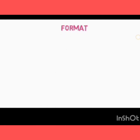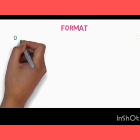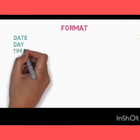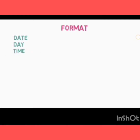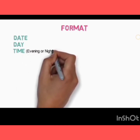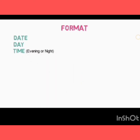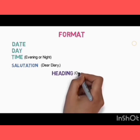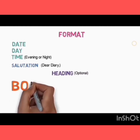Now, the format of a diary entry: when you write a diary, you first write the date — the date something happened — then the day, whether it's Monday, Tuesday, or Wednesday, and what time it is. You also write whether it is evening or night, whatever you want to write.